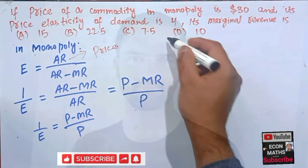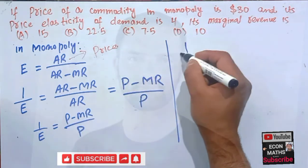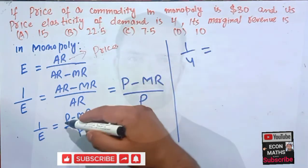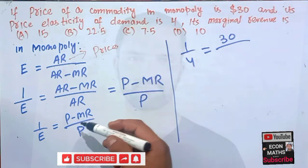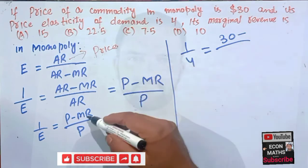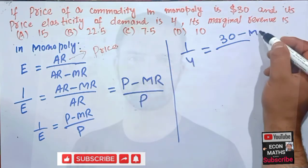We have elasticity of demand is 1/4 equals price is $30, so I will write here 30 minus marginal revenue which we have to find, divided by 30.